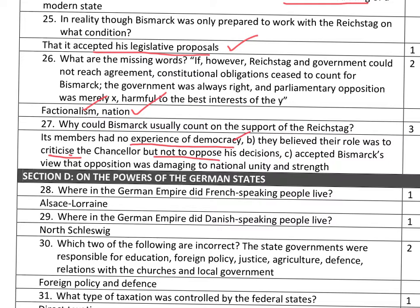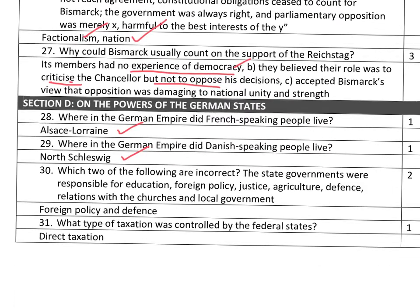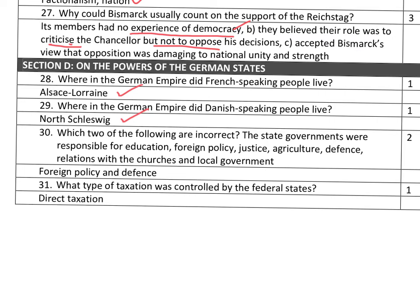Question twenty-eight: where in the German Empire did the French-speaking people live? That was Alsace-Lorraine. Where did the Danish-speaking people live? That was North Schleswig. Some of you lost marks if the word was spelt incorrectly. Question thirty: which two of the following are incorrect? This is about the responsibility of the state governments. The state governments were not responsible for foreign policy or for defence — those responsibilities were firmly with the imperial government.